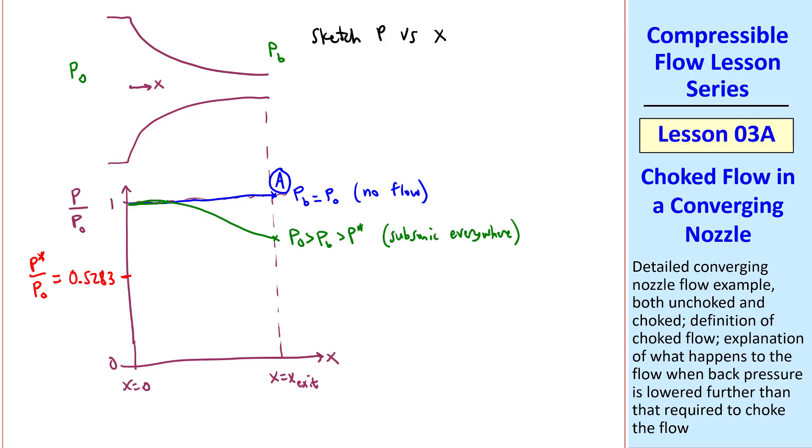Recall that for air, P-star over P-naught is 0.5283. So consider next case C, where Pb equal P-star. This is the case, discussed in part C above, where the flow is sonic at the exit plane, and the pressure drop would look something like this, Pb reaching P-star, as the flow goes through the nozzle to the exit plane.